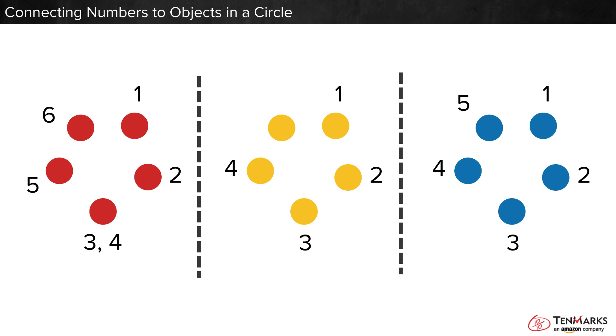Look at each picture. The first picture counts one, two, three, four, five, six. Oh, no! One of these dots is counted twice. That's not right.